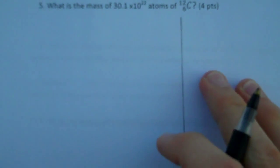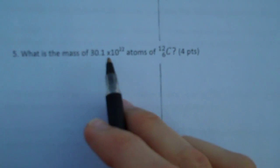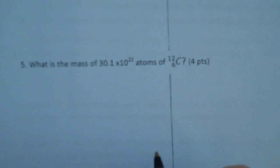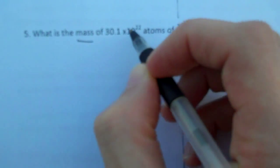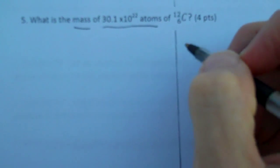Okay, let's do a little bit harder one. What is the mass of 30.1 times 10 to the 22 atoms of carbon? So, I'm asked for the mass, and I'm given the number of atoms. The first thing I need to do is find out how many moles I have.